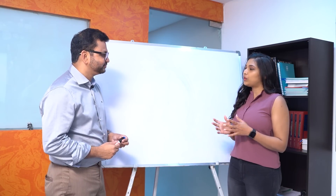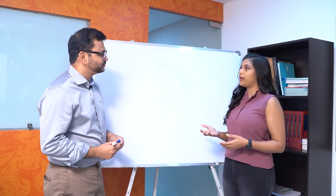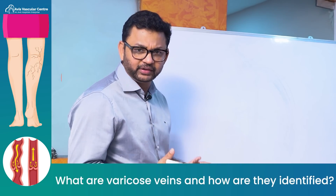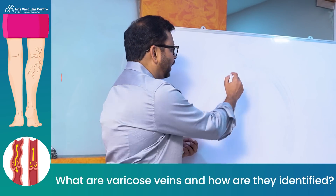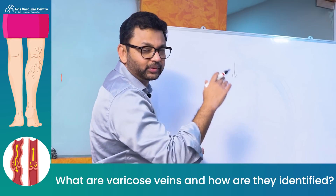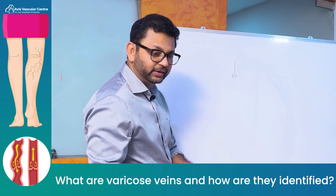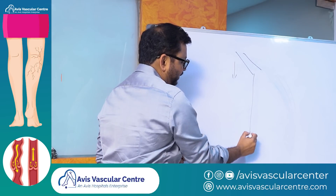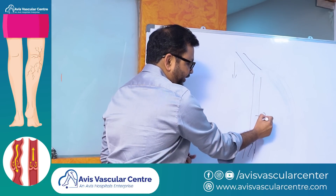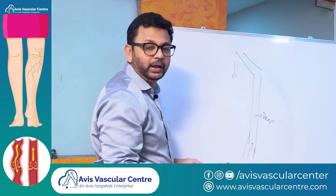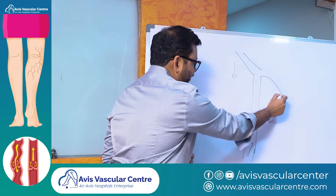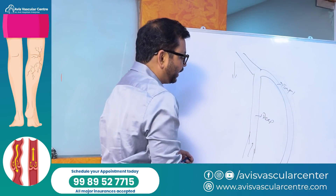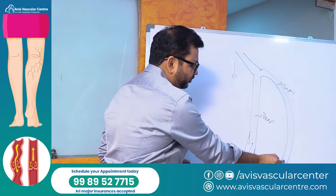So what are varicose veins and how do we identify them? We have two types of veins in the body. Arteries bring the blood from the heart to the legs, and the blood from the legs should go back through veins. There are deep veins that are deep inside, and superficial veins that are under the skin. Blood needs to go up in both the superficial vein as well as the deep vein.